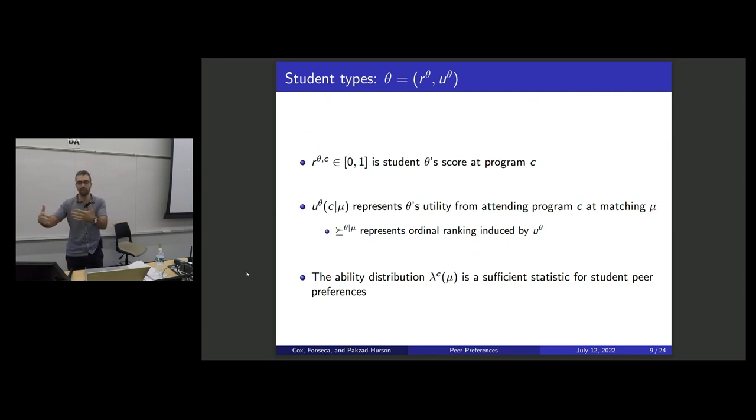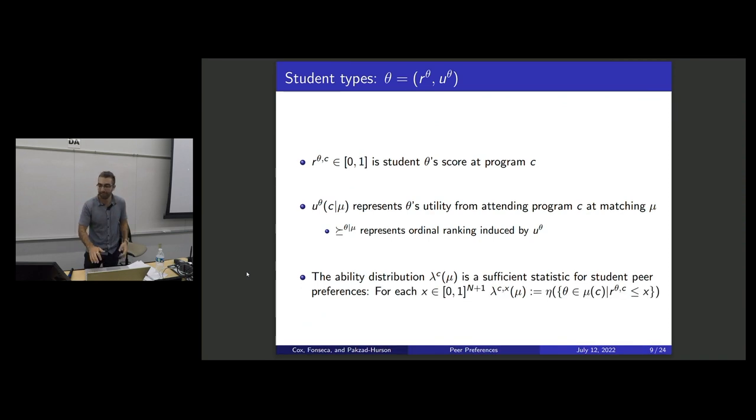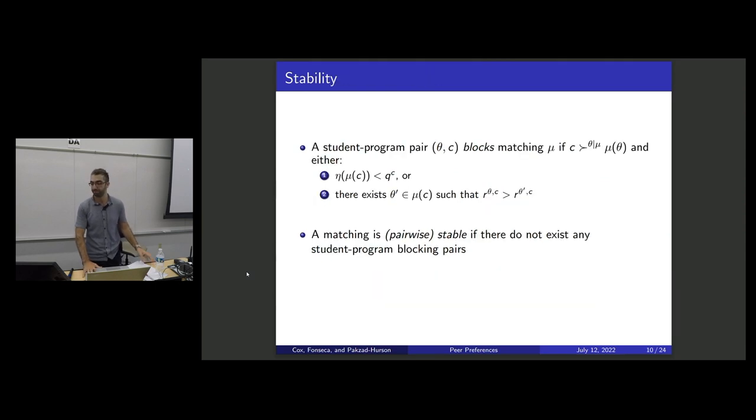Because we're caring about peer preferences, my utility may depend on who the peers are. And this squiggly theta given mu is just going to represent the ordinal ranking. So I've only talked about ability in this abstract notion, this is how much the schools like me. And this is an n plus one dimensional vector. You could add in any number of things like group identity, gender, left handedness, anything like that. Nothing would really change. And so the additional assumption I'm going to make is that students really only care about ability here.